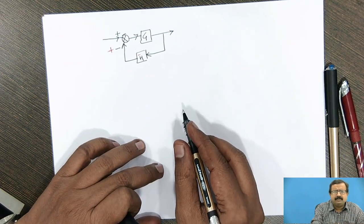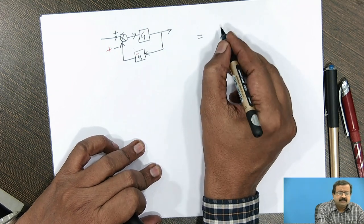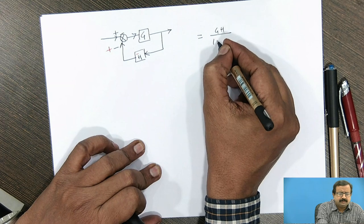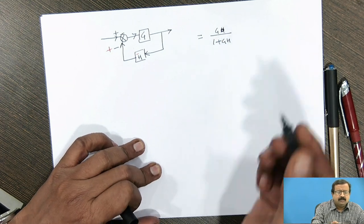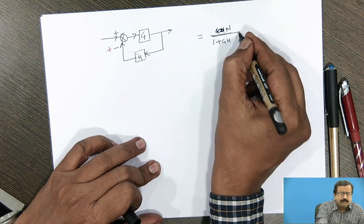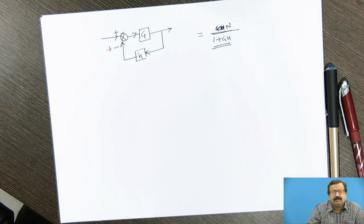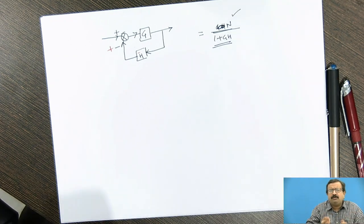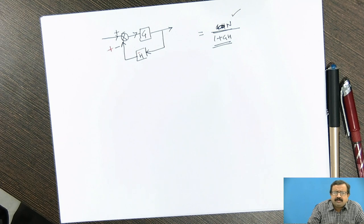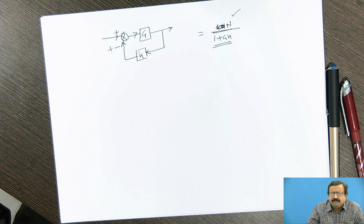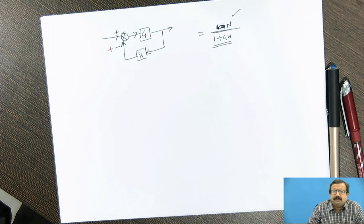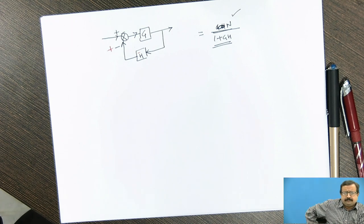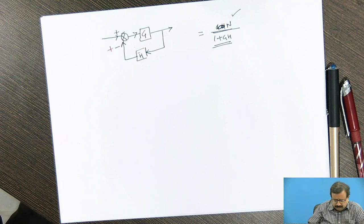We know from our block diagram algebra that the closed loop transfer function for this has got GH upon 1 plus GH if it is a negative feedback. I am not talking about numerator because even if numerator is 0, 0 is not a mathematical problem. But when 0 comes in the denominator, it creates a singularity. Singularity means a problem is there, we cannot define the function there. Function is not continuous at that particular point and if it is continuous within the proximity, we have to go for very fine calculus.